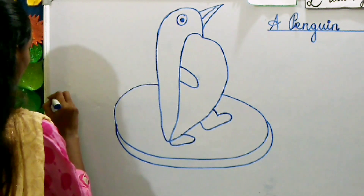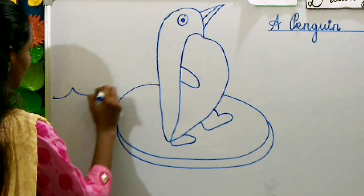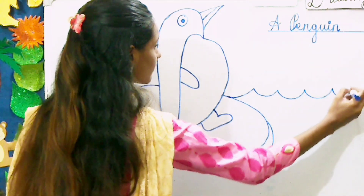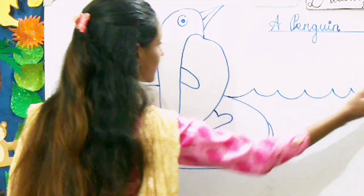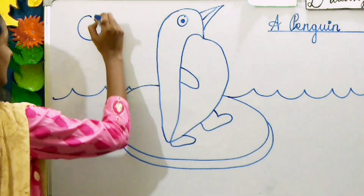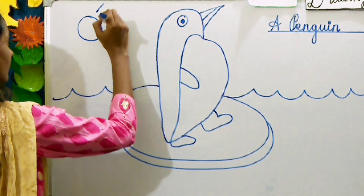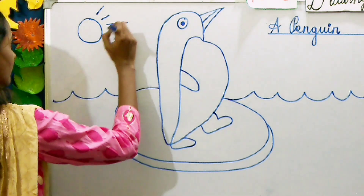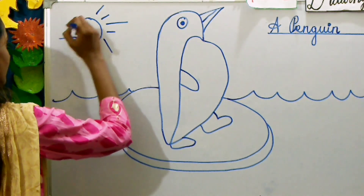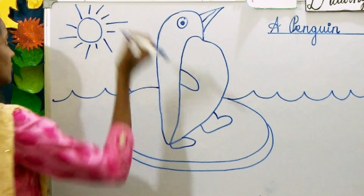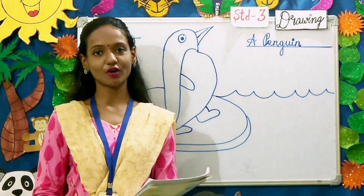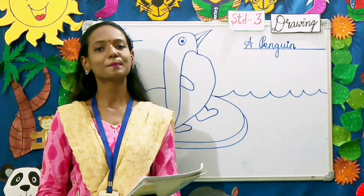Then we are going to make the waves. And the last step, we are going to draw the sun. So children, this is your step wise drawing of a penguin.